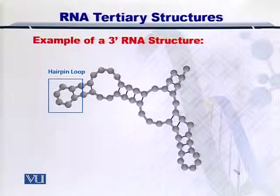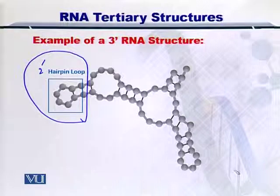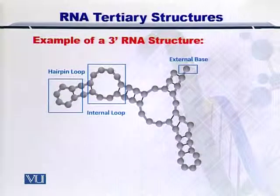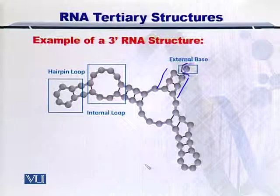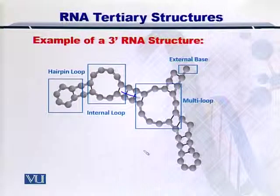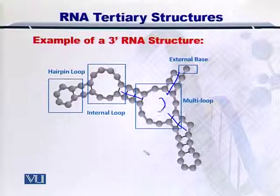If you remember, the two-prime hairpin loop — the secondary structure — is shown here in this portion. If you look ahead, there is the internal loop, as shown by the asymmetric number of unpaired nucleotide bases. Then there is the external unpaired base in the helix. This is the helix, and this is the unpaired base, so we call this an external base in the helix. And there is also the multi-loop or junction — as you can see, three different strands of helices come together to form this multi-loop, and the uncoupled bases are shown here.